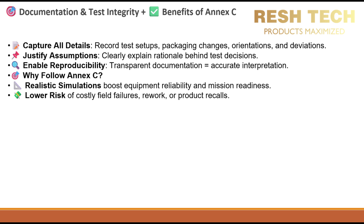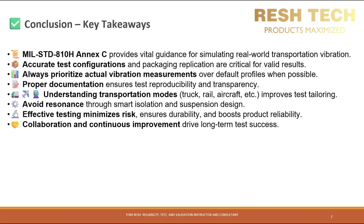Benefits of adherence to Annex C: accurate simulations ensure reliability and operational readiness, and help reduce the risk of costly failures and recalls due to vibration shock damage. Key takeaways include that MIL-Standard 810H Method 514.8 Annex C provides vital guidance for simulating real-world transportation vibration. Accurate test configurations and packaging replication are critical for valid results. Always prioritize actual vibration measurements over default profiles when possible. Understand transportation modes — truck, rail, aircraft, and so forth — to improve test tailoring. Avoid resonance through smart isolation and suspension design. Effective testing minimizes risk, ensures durability, and boosts product reliability. Collaboration and continuous improvement drive long-term testing success.